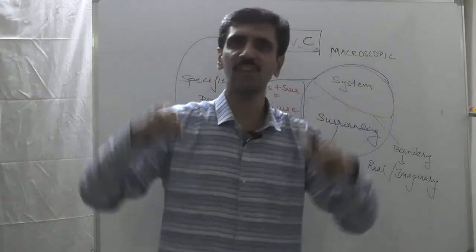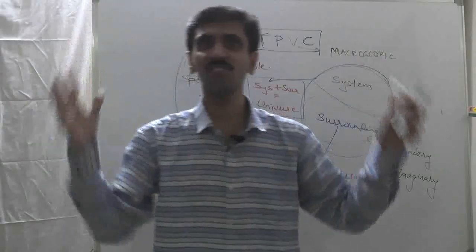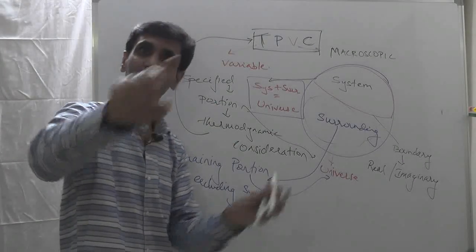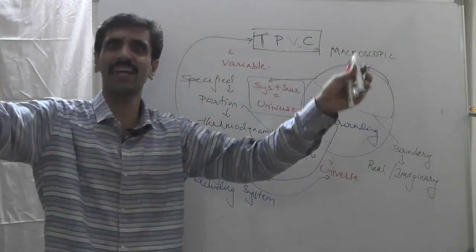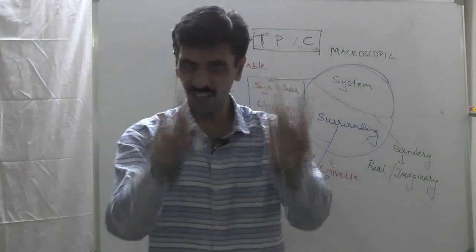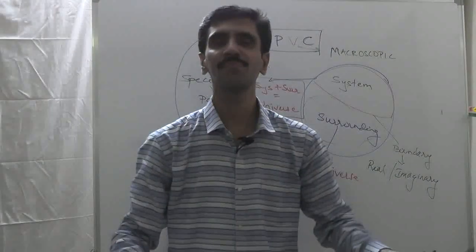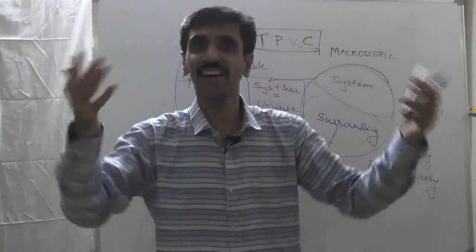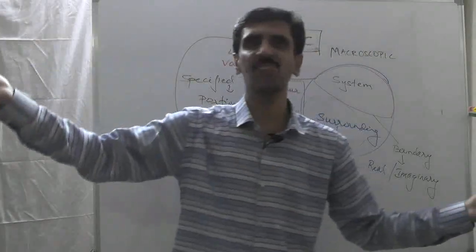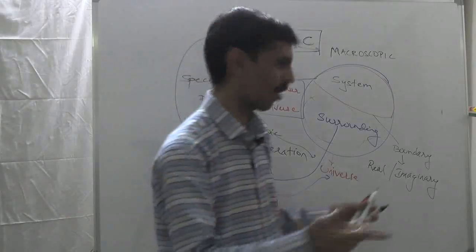For example: a student is sitting in a classroom where a lecture is going on. For that student, the system is the classroom — because system is something which is specified. Once you define the system, the surrounding is automatically defined as whatever is remaining. So for the student, the classroom is the system; outside the classroom is the surrounding. The walls and windows separating the classroom from everything else are the boundary — which are real. That's one example of a real boundary.